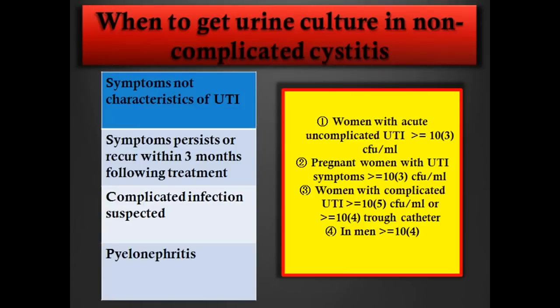When should we order urine cultures for lower urinary tract infections? Of course when symptoms are not characteristic of UTI, when symptoms persist or recur within three months of following treatment, if you suspect obstruction — which by definition is a complication — or if you suspect pyelonephritis: a patient with burning and urgency who also has some back pain, chills, or subjective fevers. In that case, you should order urine cultures.